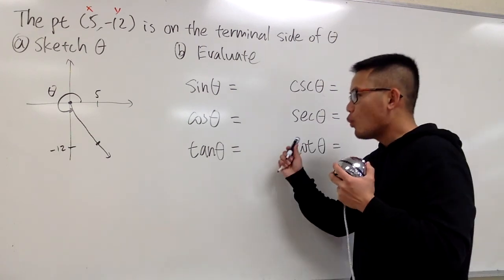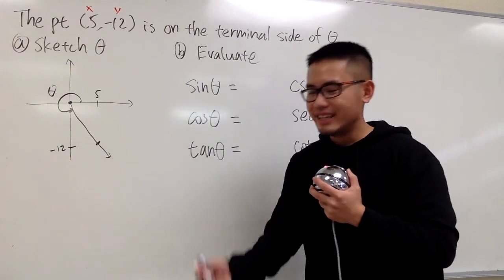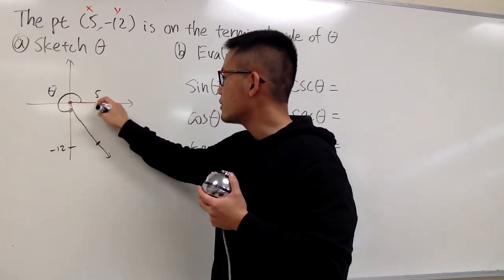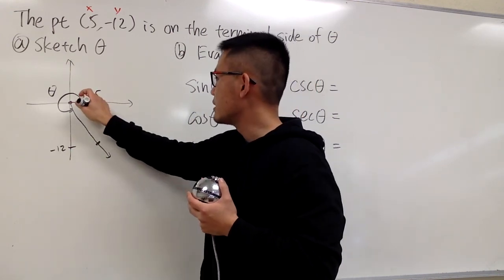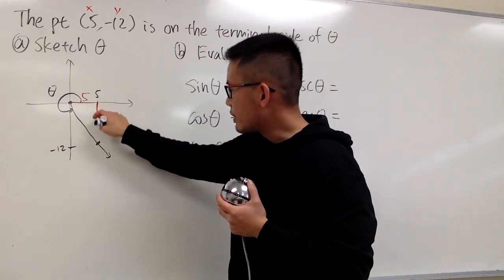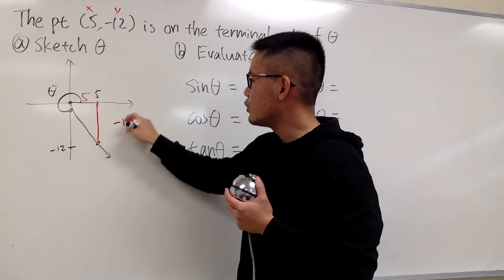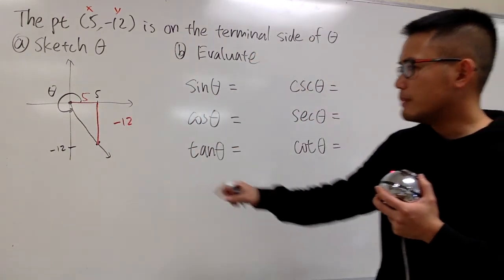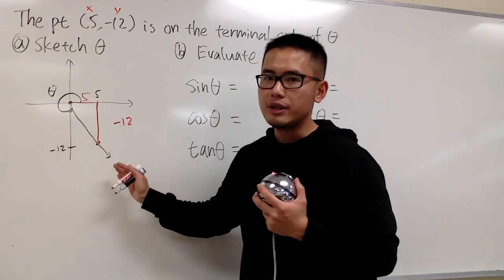However, in order for us to figure this out, we are going to come up with the right triangle. First, you see that from the origin to 5, the horizontal distance is just the x value. It's just the 5, right? So let me put this down as 5. And we also know that if you just go down right here, that's the y value. And we know that's technically negative 12, because that's down below. So you label this side as negative 12. And we pretty much have a right triangle already.